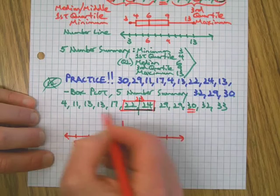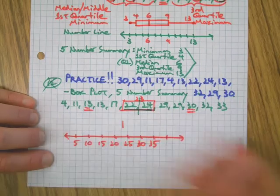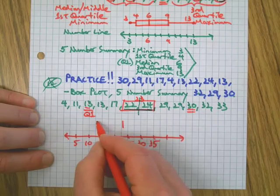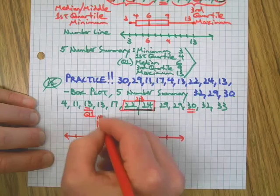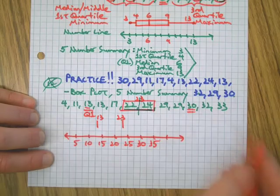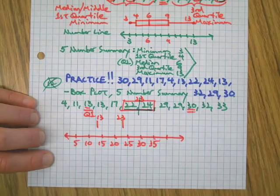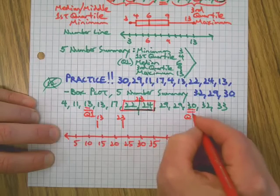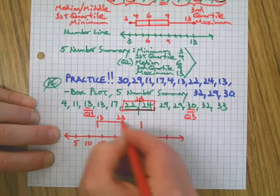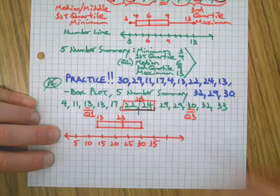Then, since these numbers are all taken, I'm gonna take the median of the lower half, which is the first quartile, which is 13 in this case. 13, 23, median of the upper half, which is also called the third quartile, that's 30. Let's make the box.